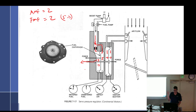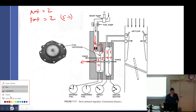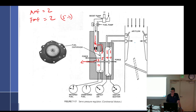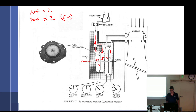Let's say we open the throttle a little, so air metering force increases. Each component goes up by half — venturi and impact each go to 1.5, so air metering force is now three. What does that do to the poppet valve? The regulator moves to the right, opening the outlet.